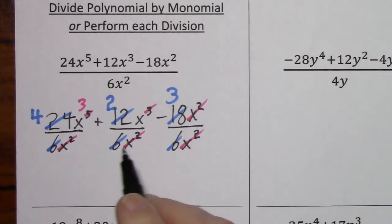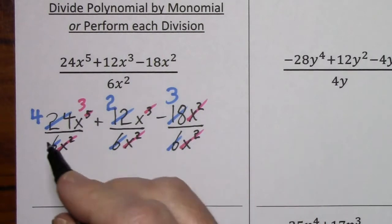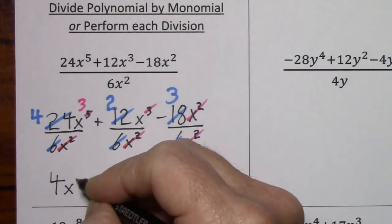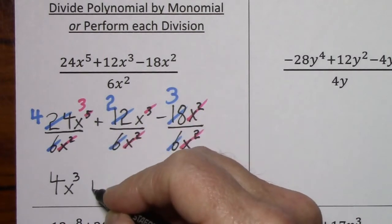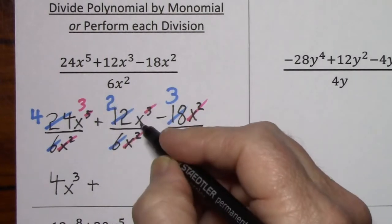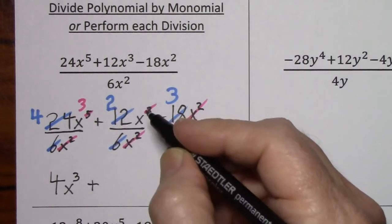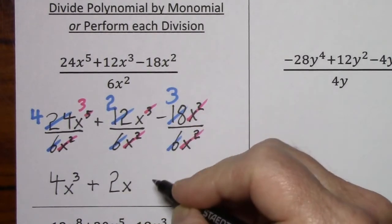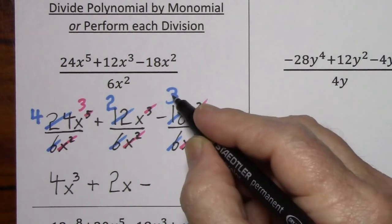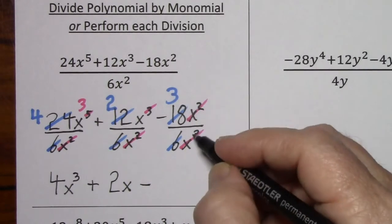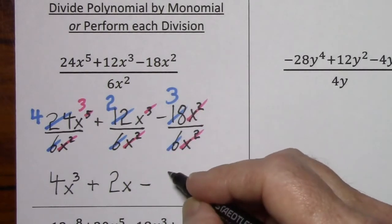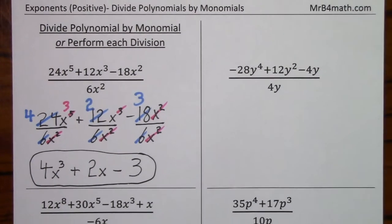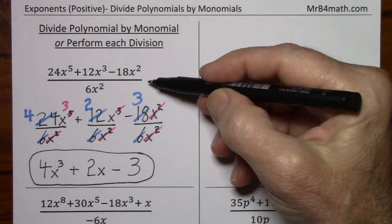So now we'll see what's left standing. We have 4x to the 3rd, positive 2x to the 1st — we don't have to write the 1 — and negative 3 with no x's, so just negative 3. This is a fairly typical example.